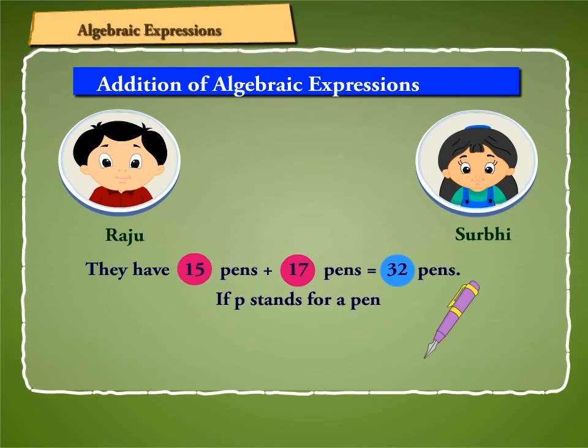If P stands for a pen, the above statement can be written as 15P plus 17P is equal to 32P.